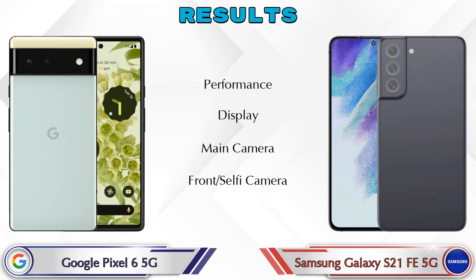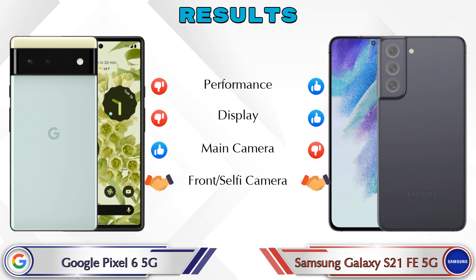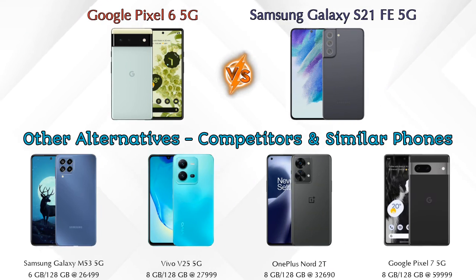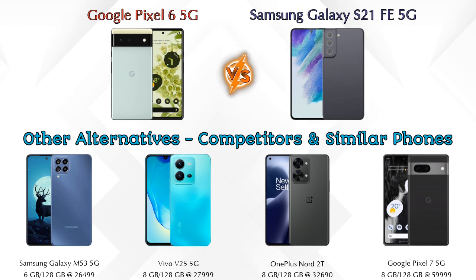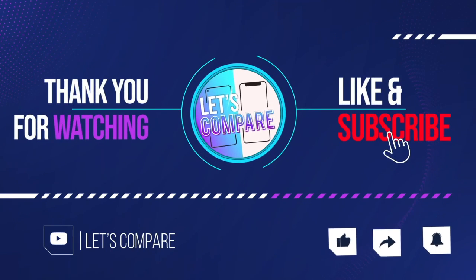Finally, talking about results: in performance, the S21 FE 5G is ahead; in display, the S21 FE 5G is ahead; in main camera, the Pixel 6 5G is ahead; and in front selfie camera, both phones are the same. For other competitors at the same price, consider the Samsung Galaxy M53 5G, Vivo V25 5G, OnePlus Nord 2T 5G, and Google Pixel 7 5G. Details about all competitor phones are available in the description. If you liked our video, please like and subscribe. Thanks for watching!